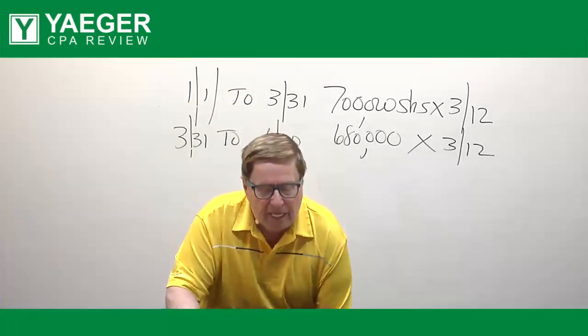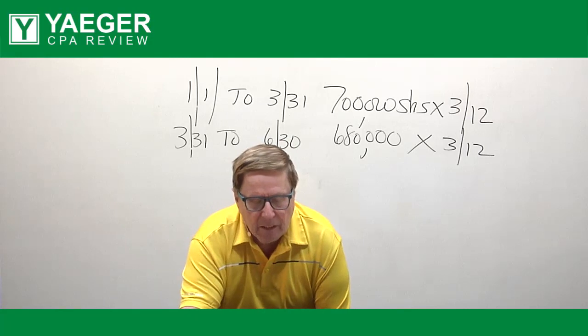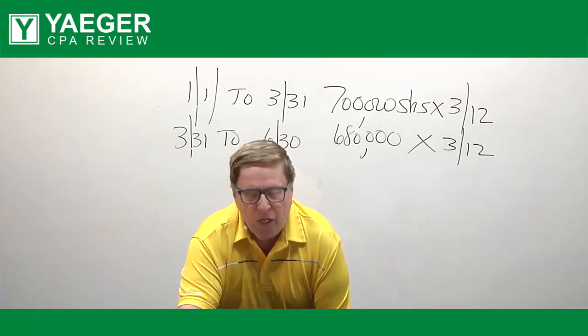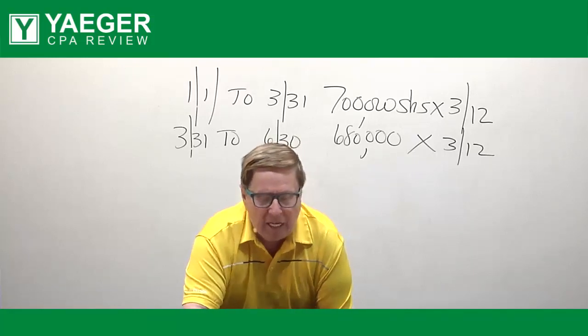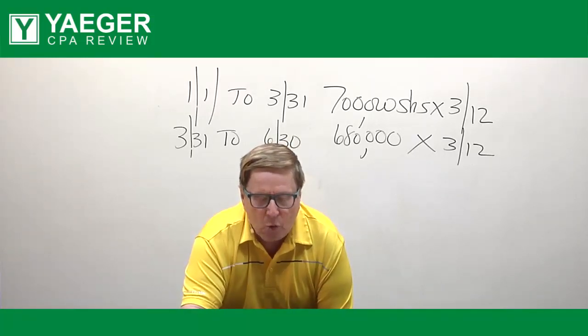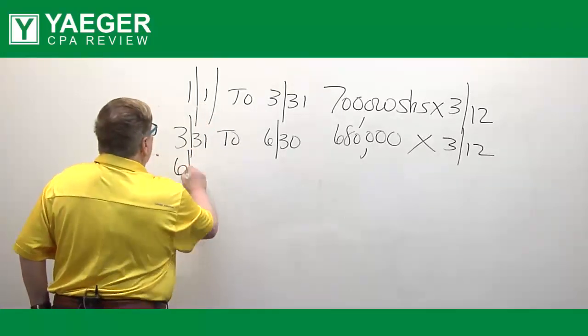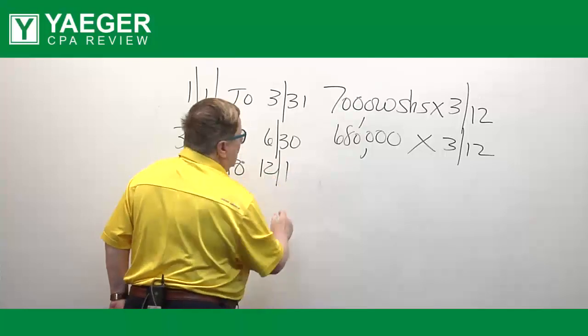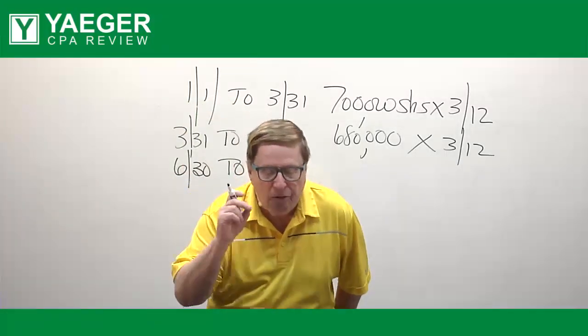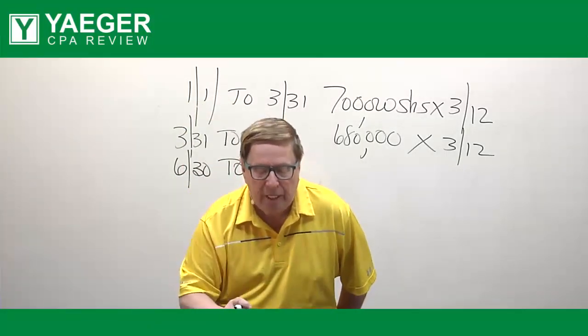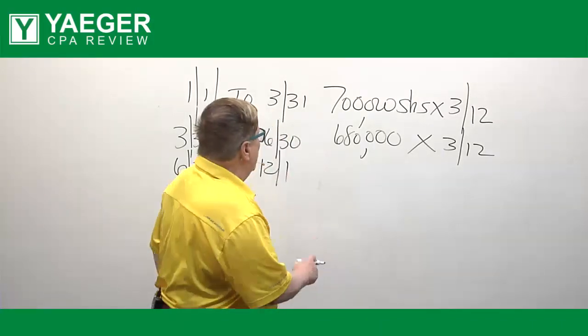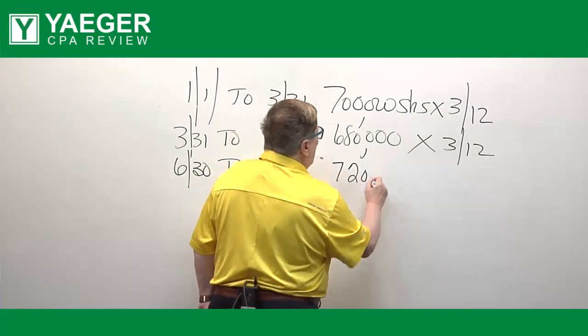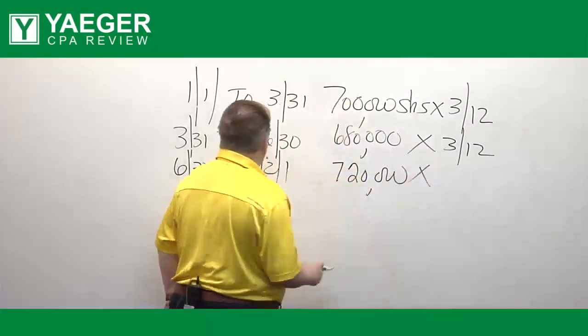Now the next thing it said was on 6-30 we converted preferred stock to common stock, 40,000. Now we had that until the next date which is 12-1. So from 6-30 to 12-1, we actually converted preferred shares to common of 40,000 shares. So what we're going to do now is add the 40,000 to the 680, and we had 720,000 shares for how many months?